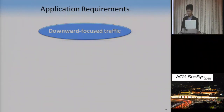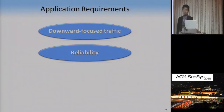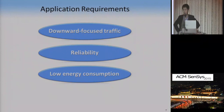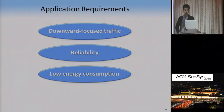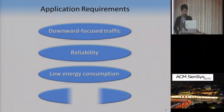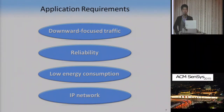Second, MarketNet should update price tags more reliably than manual updates. Third, each e-price tag is required to use battery as its power source for easy deployment. Given that battery replacement is another source of labor cost, each e-price tag should consume low energy to prolong battery life. Lastly, typical markets have network managers familiar with IP protocols, so our MarketNet needs to be IP compliant.